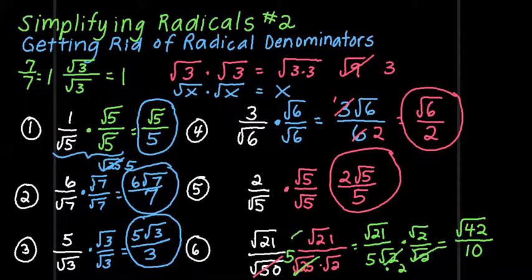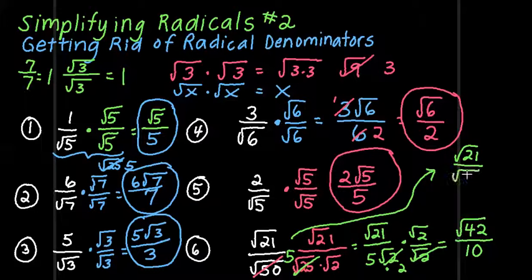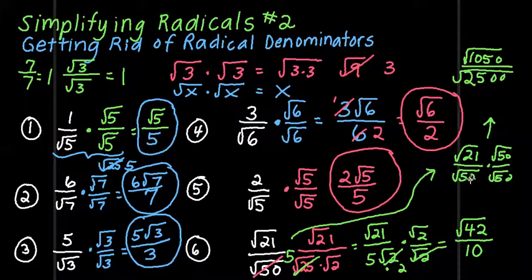Now, another way you might want to do this one is, if I didn't recognize that I had a perfect square in that 50, I could just multiply both the top and the bottom by the square root of 50. And then I'd get 21 times 50, and I'm actually going to work this way. 21 times 50, well 5 times 21 is 105, so that's going to be the square root of 1050. And on the bottom 50 times 50, well 5 times 25 is 25, so that's 2500. And then since hopefully you recognize that the square root of 50 times the square root of 50 is actually 50, I would cross this off and make it a 50.